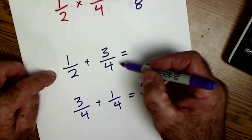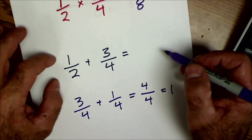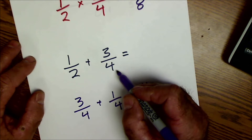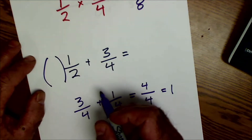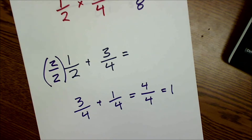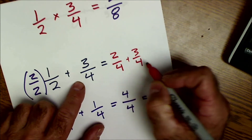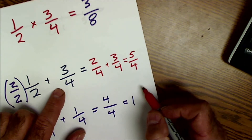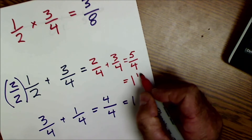The problem comes up when the bottom numbers aren't the same. Getting that bottom number the same is called finding a common denominator. I have to figure out what to multiply the fraction by to give it the same denominator. In this case, four is my common denominator — one fraction is already there, so I multiply the other by two over two. That's multiplying by a factor of one, so it doesn't affect the value. Now I have two fourths plus three fourths; I add across the top to get five fourths. As a mixed number, that's one and one quarter.